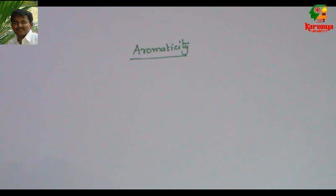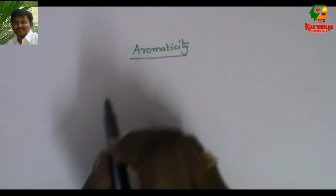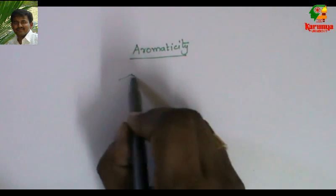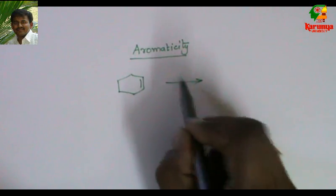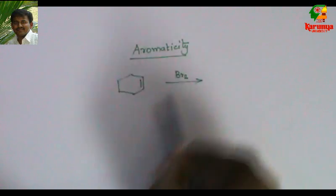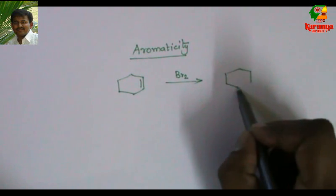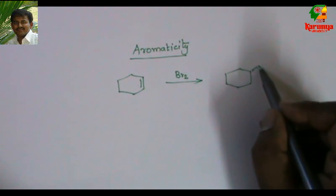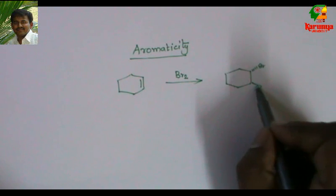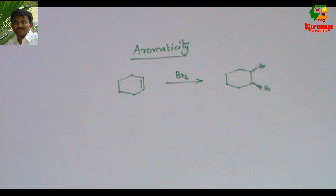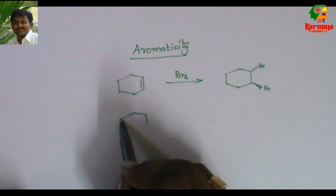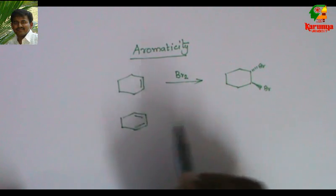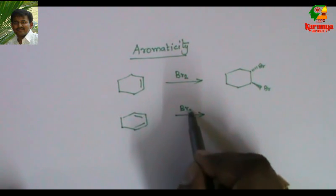Today we are going to study on the topic of aromaticity. First, let us take the compound cyclohexene. If I add bromine to this, what I get is a dibromo compound. Let us go for another compound like this diene.